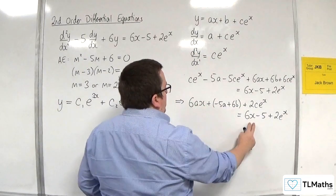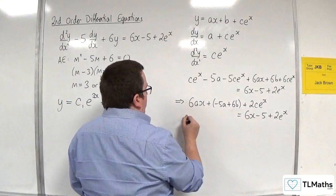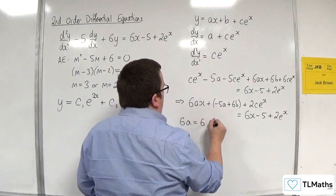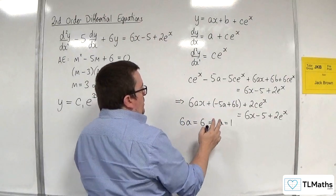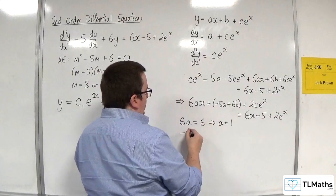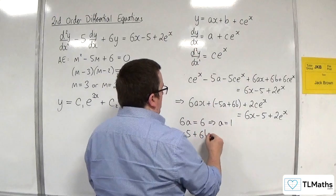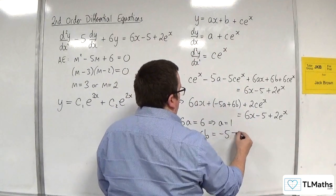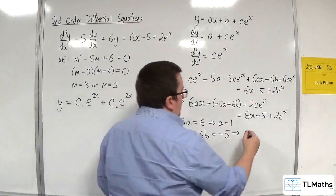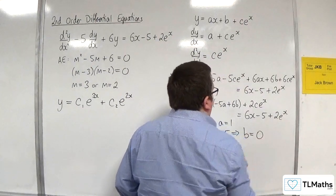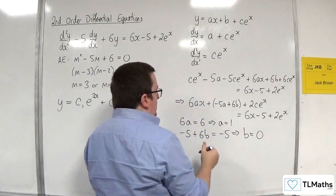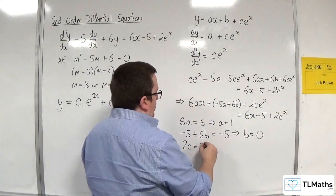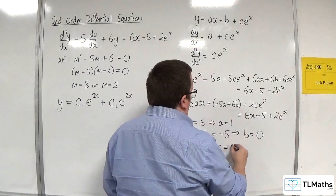So the coefficient of x has got to be the same. We've got 6a equaling 6, so a must be equal to 1. Substitute that in here, we're going to get minus 5 plus 6b must be equal to minus 5, so that means that b is going to have to be 0. And the coefficient of e to the x here is going to be the same here, so 2c must be equal to 2, so c must be equal to 1.